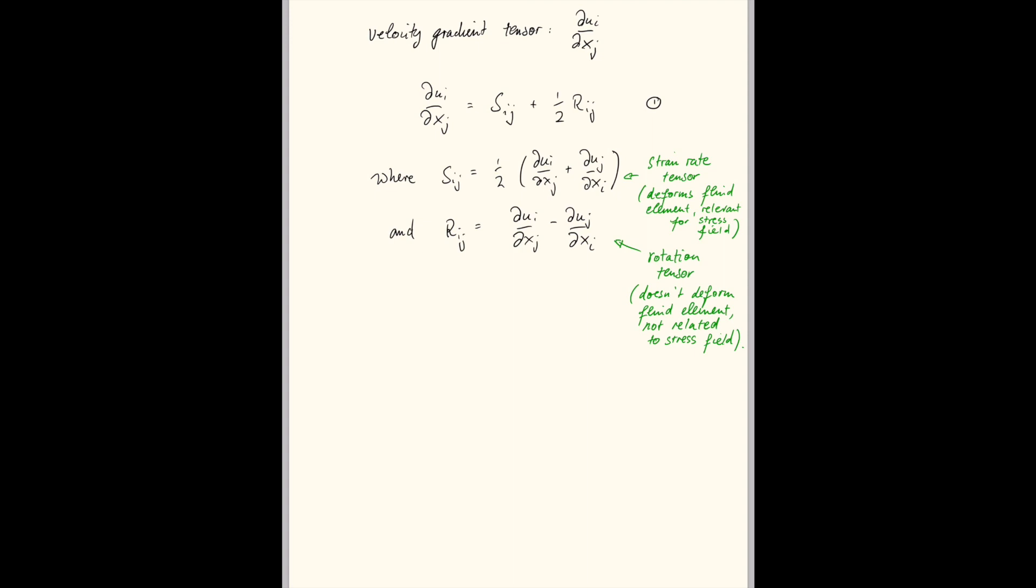In the last lecture, we looked at the diagonal components s eta eta of the strain rate tensor and found that those were simply given by du eta dx eta. I'm using Greek letters here to signify that there's no summation convention used over the repeated indices. So the first element of the strain rate tensor s11 is equal to du1 dx1.